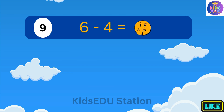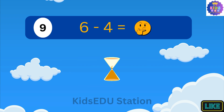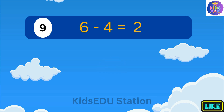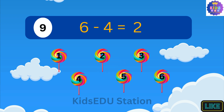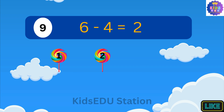What is 6 minus 4? 6 minus 4 is 2. Imagine you have 6 lollipops. You ate 4 of them. Now you have 1 and 2 lollipops left.